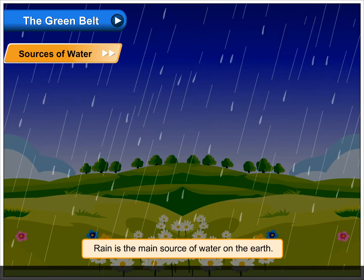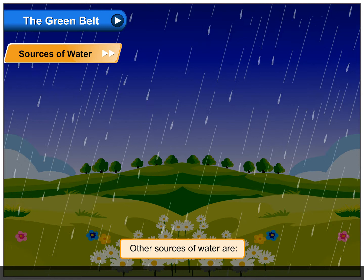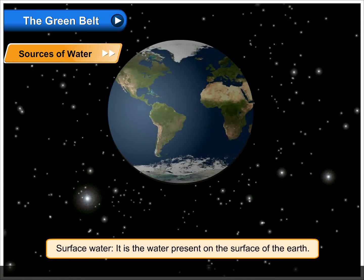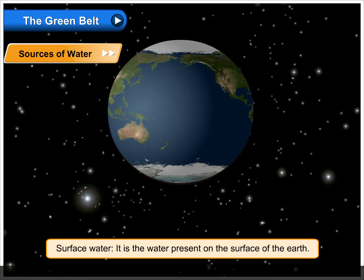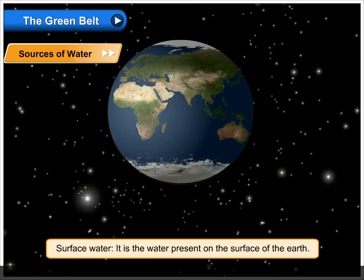Rain is the main source of water on the Earth. Other sources of water are surface water. It is the water present on the surface of the Earth.